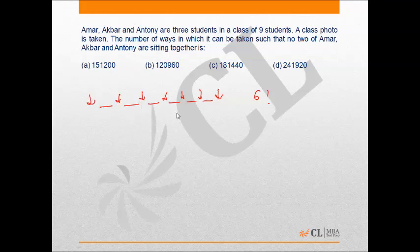So Amar, Akbar and Anthony would occupy any 3 of these 7 places in 7C3 ways. But they would also arrange among themselves in 3 factorial ways.